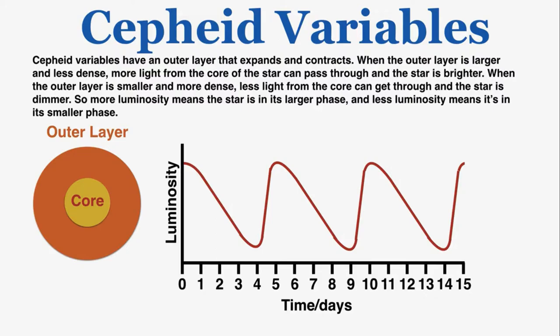A very common Cepheid question is to be given a luminosity-time graph and asked where the star is largest and where it is smallest. The star is going to be largest at its highest luminosity and smallest at its lowest luminosity.